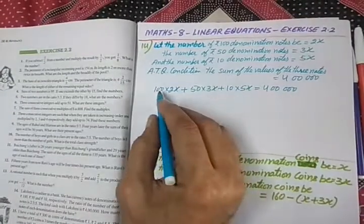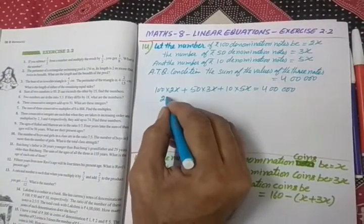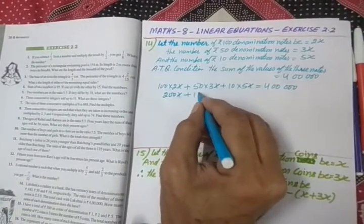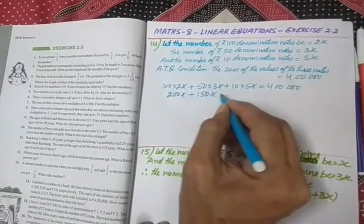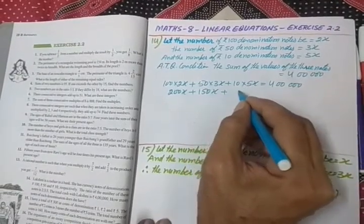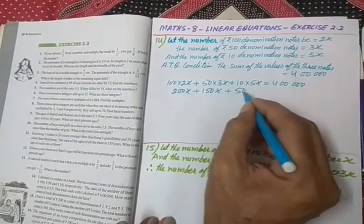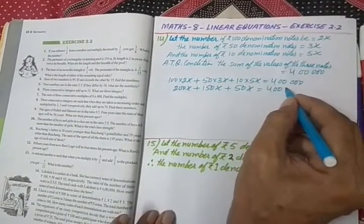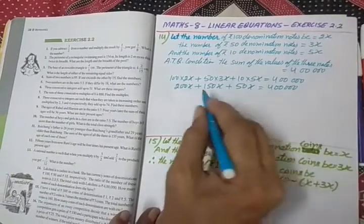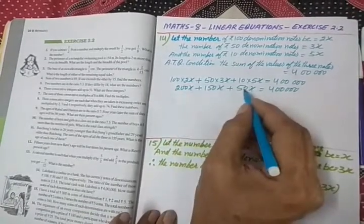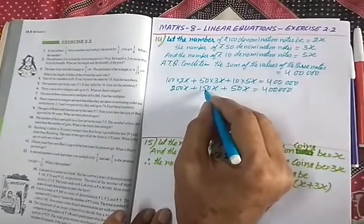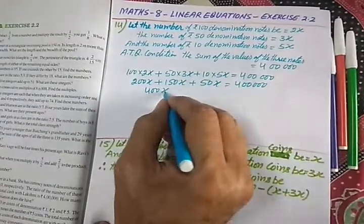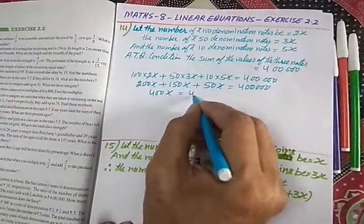This will give you 200x plus 150x plus 50x is equal to 4 lakh. Adding these together — 200 plus 150 plus 50 — gives you 400x is equal to 4 lakh.